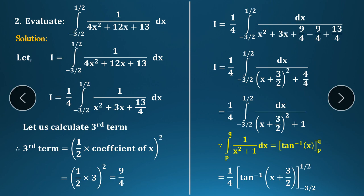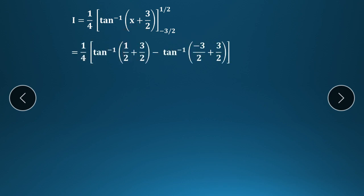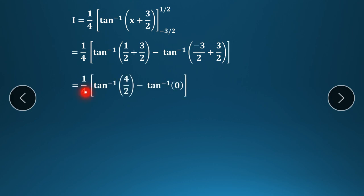So we get: (1/4) × tan⁻¹(x + 3/2), with limits from −3/2 to 1/2. Substituting upper limit x = 1/2: tan⁻¹(1/2 + 3/2) = tan⁻¹(2). Substituting lower limit x = −3/2: tan⁻¹(−3/2 + 3/2) = tan⁻¹(0). So: (1/4)[tan⁻¹(2) − tan⁻¹(0)].